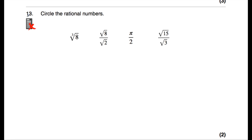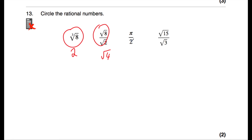Question number thirteen: circle the rational numbers. The cube root of 8 is 2 (since 2 times 2 times 2 is 8), so that's rational. Root 8 divided by root 2: using laws of surds, that's the square root of 4, which is 2 — rational. Pi divided by 2 is irrational. Root 15 divided by root 3 is the square root of 5, and since 5 isn't a square number, that's irrational. So the rational numbers are the cube root of 8 and root 8 divided by root 2.